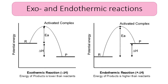These diagrams representing exothermic and endothermic reactions shouldn't be particularly new to you. On the diagrams, the y-axis shows potential energy — the energy stored in the bonds of the chemicals. There is a line representing the reactants labelled R, a line labelled P for products, and a curve going between them that always goes up into a hill and back down to the products. The highest point on that curve is the activated complex.